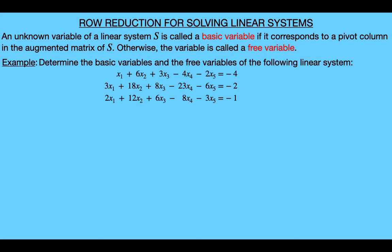So let's look at an example. In this example, we want to determine the basic and free variables for this linear system, so we need to find the pivot columns of the augmented matrix of the system, which is given here. Now to find the pivot columns, we'll need to find the pivot positions, which remember are the locations corresponding to a leading one in the unique reduced echelon form of the matrix. And so we can find these pivot positions by working through the row reduction algorithm.